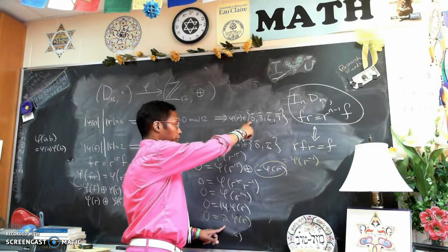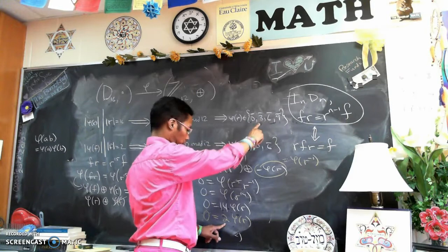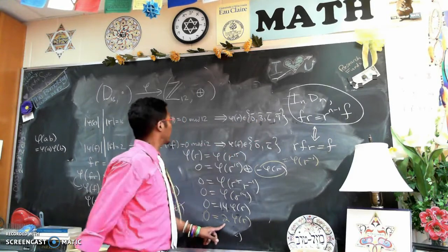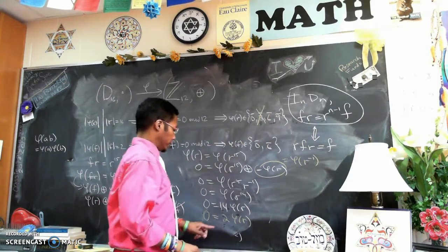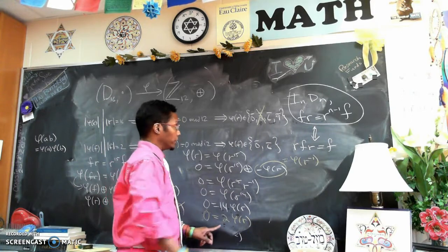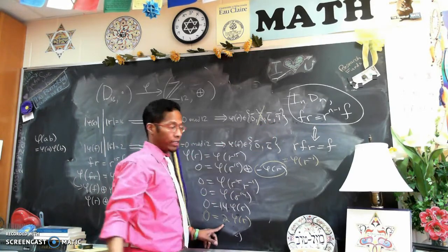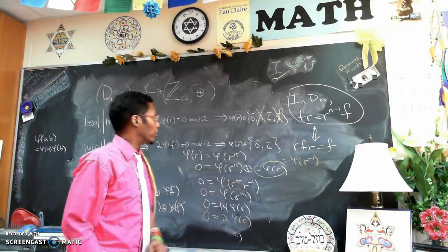Is 2 times 0, 0? Yes. Is 2 times 3, 0? No. 2 times 3 is not 0 in Z12, so this is not allowed. Is 2 times 6, 0? Yes. Is 2 times 9, 0? No. 2 times 9 is 18, that's not 0. So of the four choices that we had before, we've eliminated two of them.